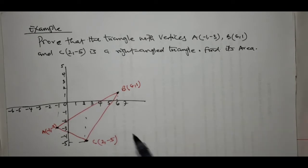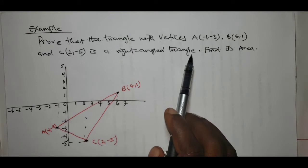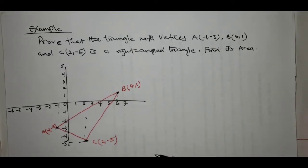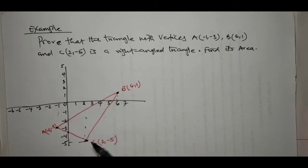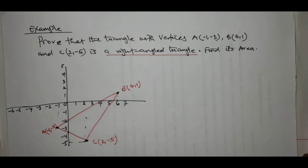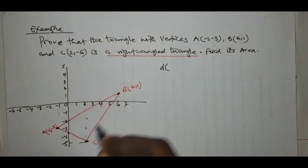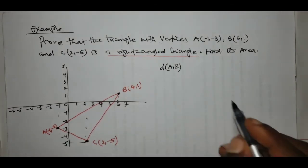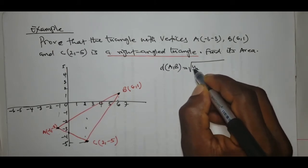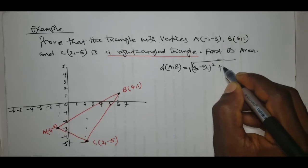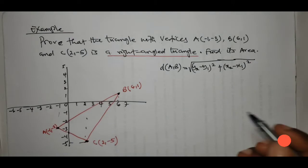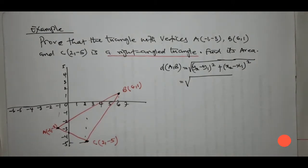The question is to prove that triangle ABC is actually a right-angled triangle. The way we go about this problem is to find the distances between the three vertices and use properties of triangles to determine if the triangle is indeed right-angled or not. So the first thing we want to calculate is the distance between point A and B. Our distance formula remains: square root of (y2 minus y1) squared plus (x2 minus x1) squared.